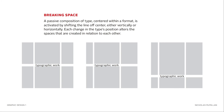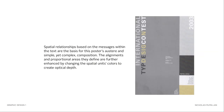By taking that same type and shifting it down into the lower third of the page and off to the left, we really activate the space on top. We can now utilize that active space to bring the eye down to the type, or allow the eye to travel from the type up to whatever is in that space. Spatial relationships based on the messages within the text are the basis for a poster's austere yet complex composition, further enhanced by changing the spatial unit's colors to create optical depth.